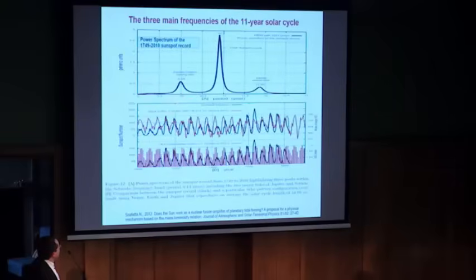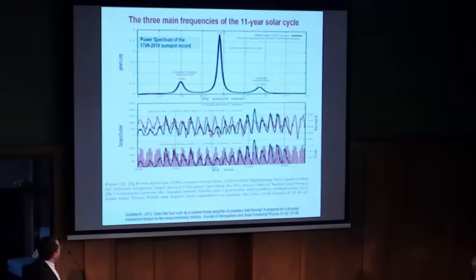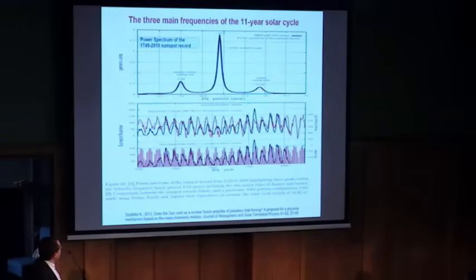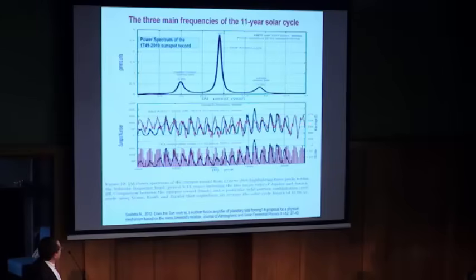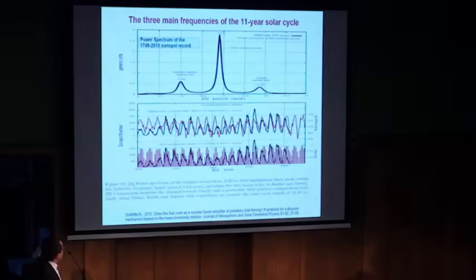If we study the 11-year solar cycle, we see that there is a peak around 11 years, but then we have a side peak at 11.86 years — the Jupiter orbital period — and at 9.98 years, essentially the spring tide harmonic between Jupiter and Saturn. These two side peaks represent essentially planetary influences. It is also possible to create a tidal model by Venus, Earth, and Jupiter which actually produces an 11-year solar cycle. The red model pretty much reconstructs the observed 11-year solar cycle.